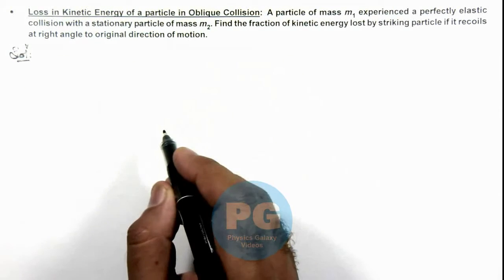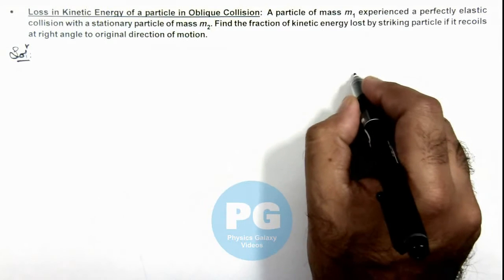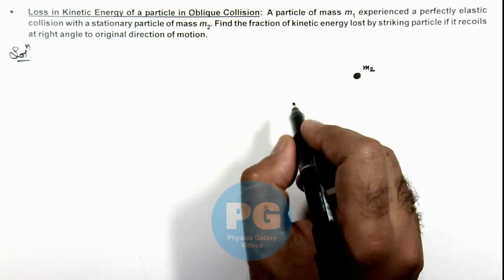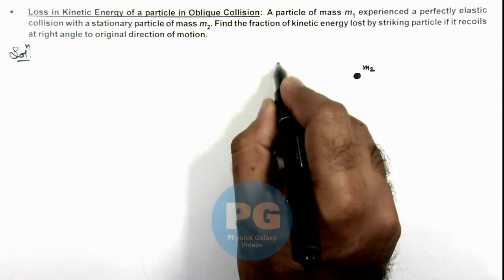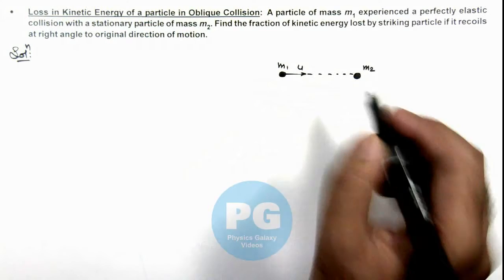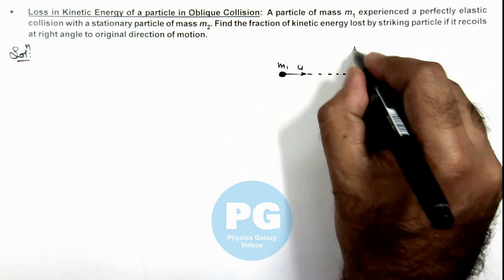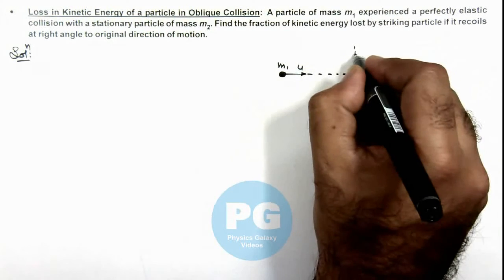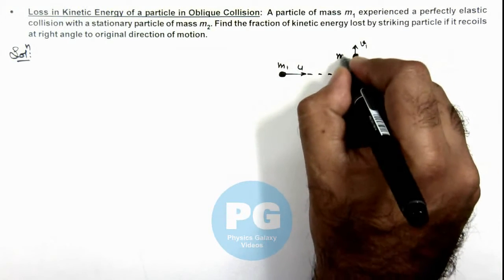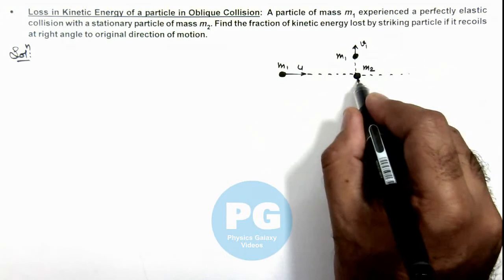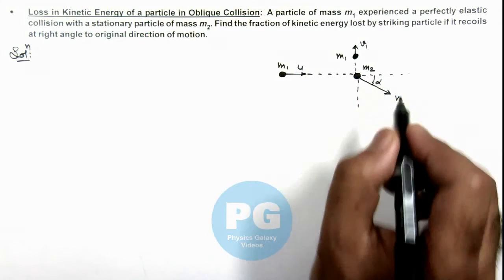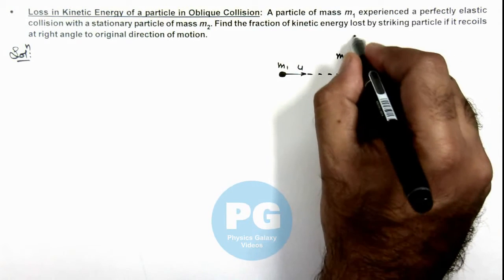This is a good illustration to understand oblique collision. A particle of mass m2 is kept at rest, and another particle of mass m1 is moving at a speed u, which collides elastically with m2. Given that m1 recoils at right angle to the original direction of motion, say with a velocity v1 in this direction. Then to conserve momentum, m2 would be going somewhere here with a velocity v2 at an angle alpha. If we consider this as the x direction and this as the y direction.